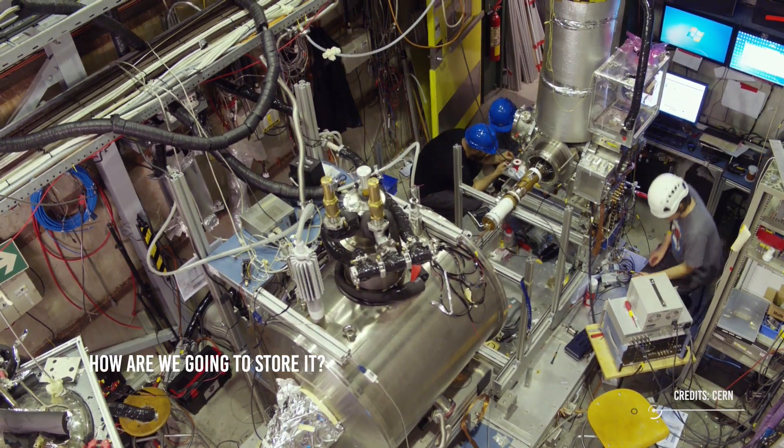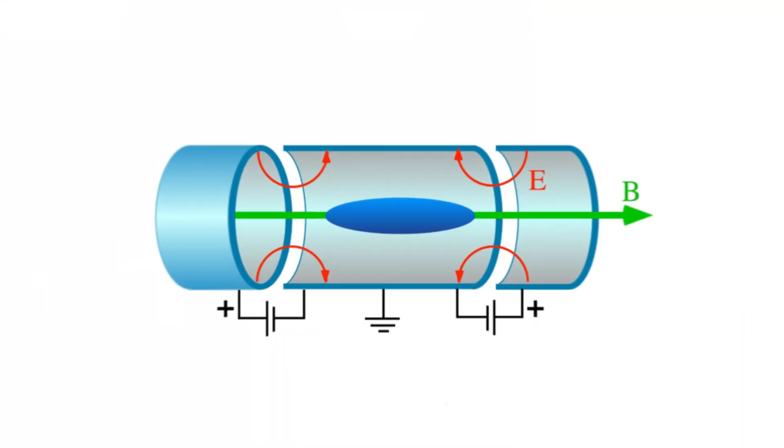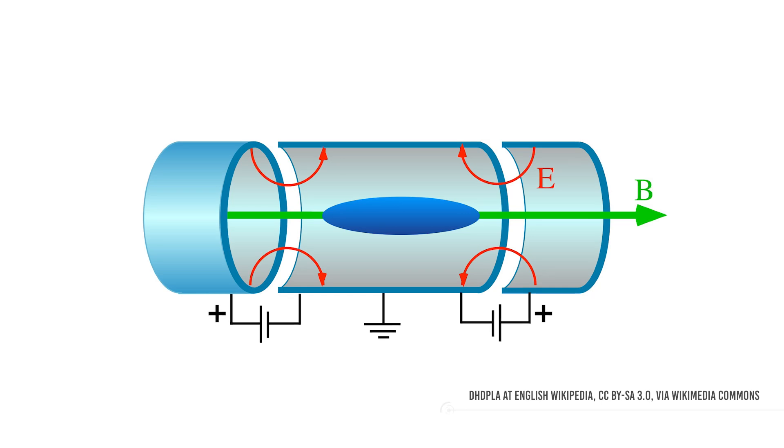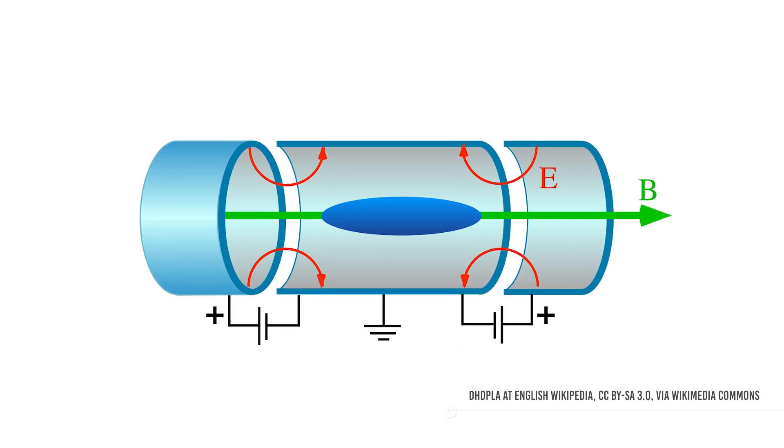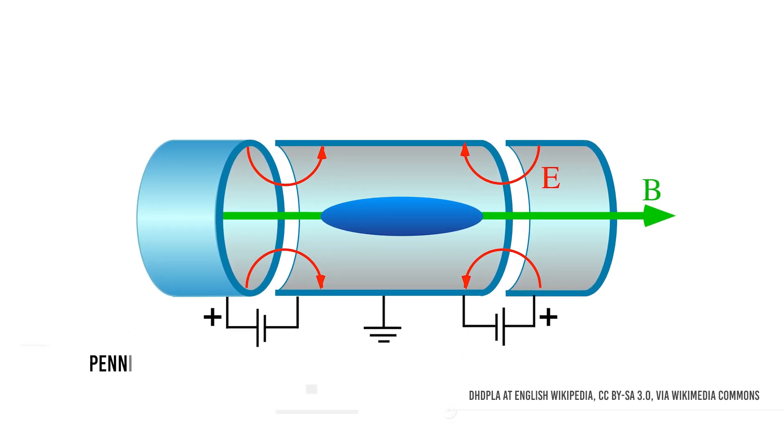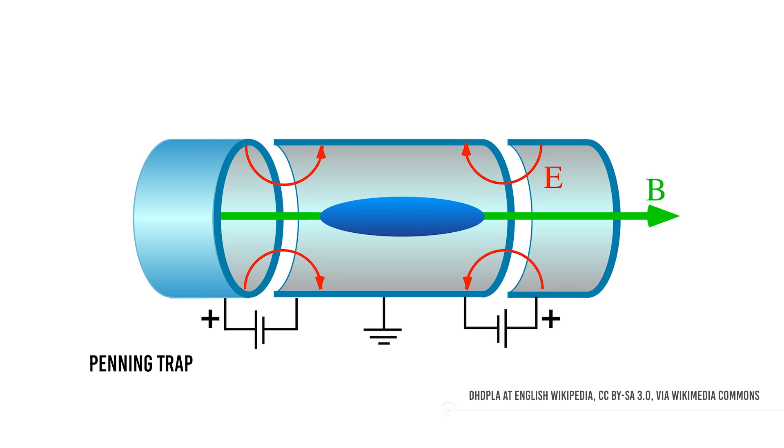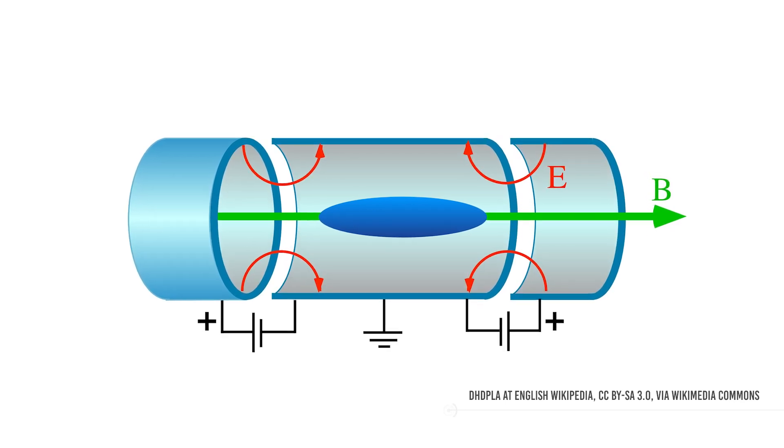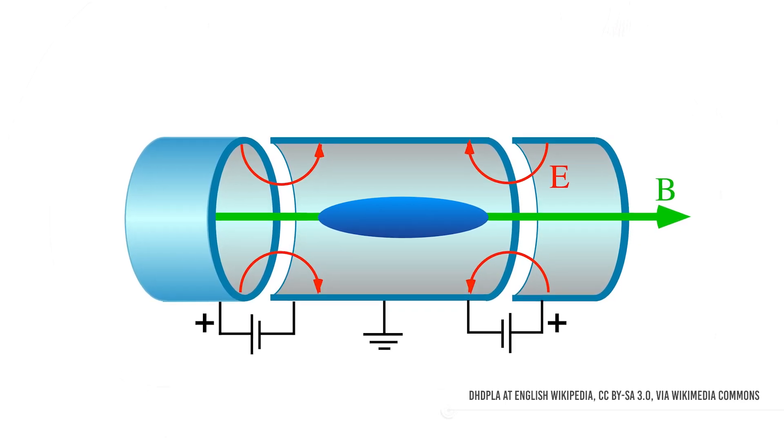So how are we going to store it? Well, anti-matter in the form of charged particles can be contained in an electric field in a device called a penning trap. Just make sure you keep the power supply on. Such a trap uses the dipole movement of the trapped particles.